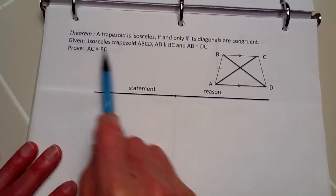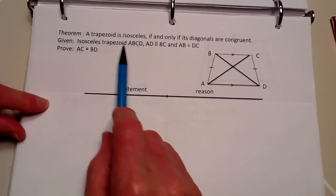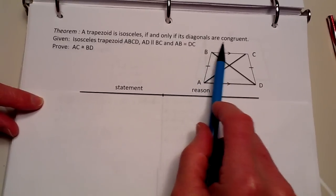Today we're going to be proving the theorem: a trapezoid is isosceles if and only if its diagonals are congruent.